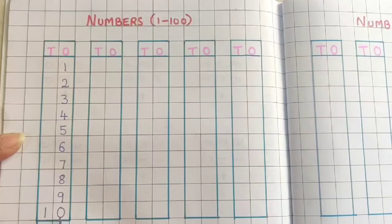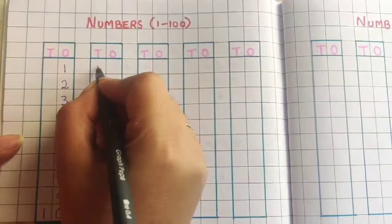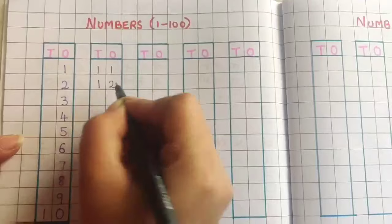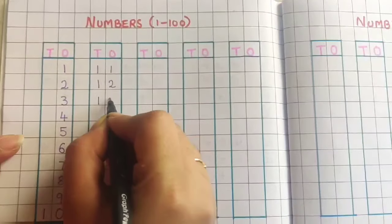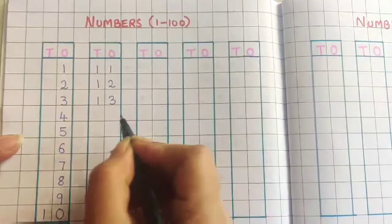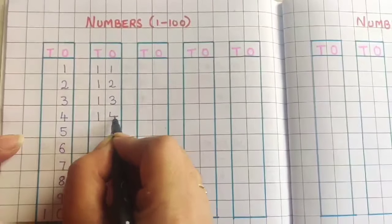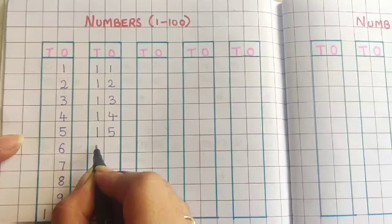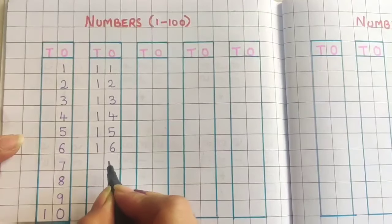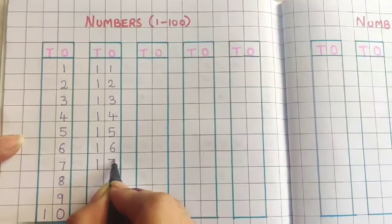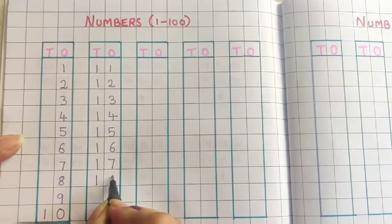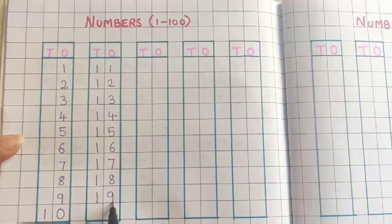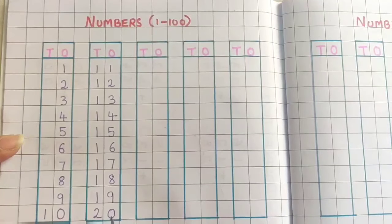So 1, 0, 10. 1, 1, 11. 1, 2, 12. 1, 3, 13. 1, 4, 14. 1, 5, 15. 1, 6, 16. 1, 7, 17. 1, 8, 18. 1, 9, 19. 2, 0, 20.